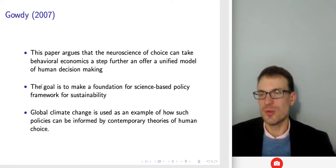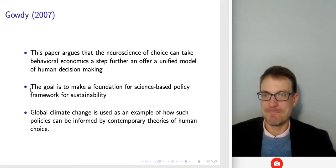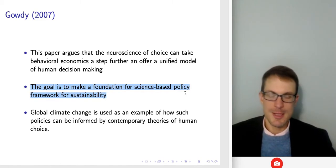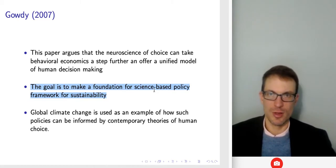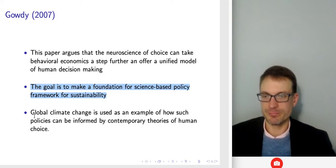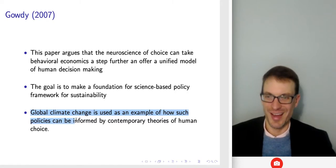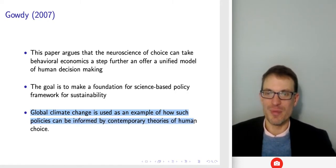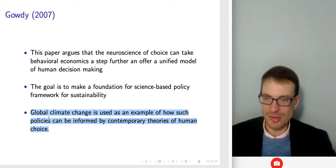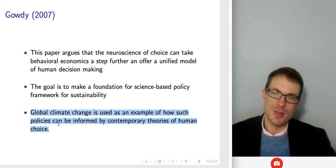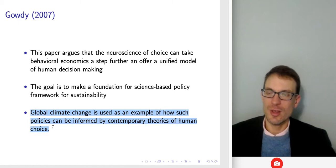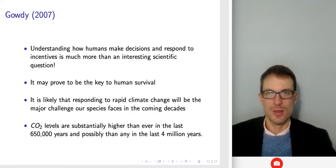In this particular paper, they argue we could take the idea of behavioral economics and try to come up with an interesting policy framework workable for collections of large groups of humans. Climate change is an example of how policies can be informed by theories of human choice, and maybe ought to be, because it's a really massive question thinking about what's happening and what the human role is.